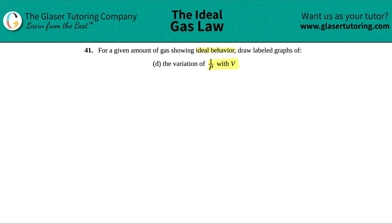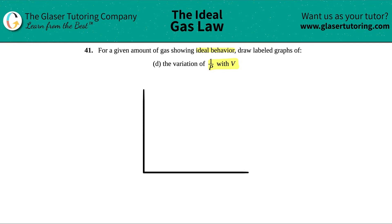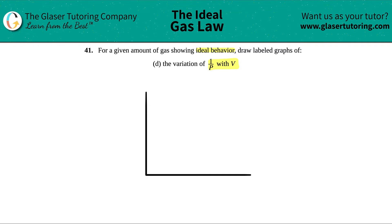I'm going to draw out my axis. If we have pressure and volume, volume is going to be the independent axis, so I'll put volume over here, and they are specifically saying that we want 1 over pressure on the other axis.